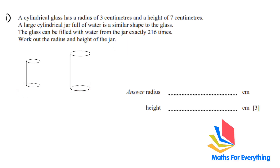This is the glass and this is the jar. The radius of the glass is 3 centimeters and the height is 7 centimeters. We need to find the radius and height of the jar. The information given to us is that the glass can be filled from the jar exactly 216 times, so the capacity — which means volume — has been given to us.